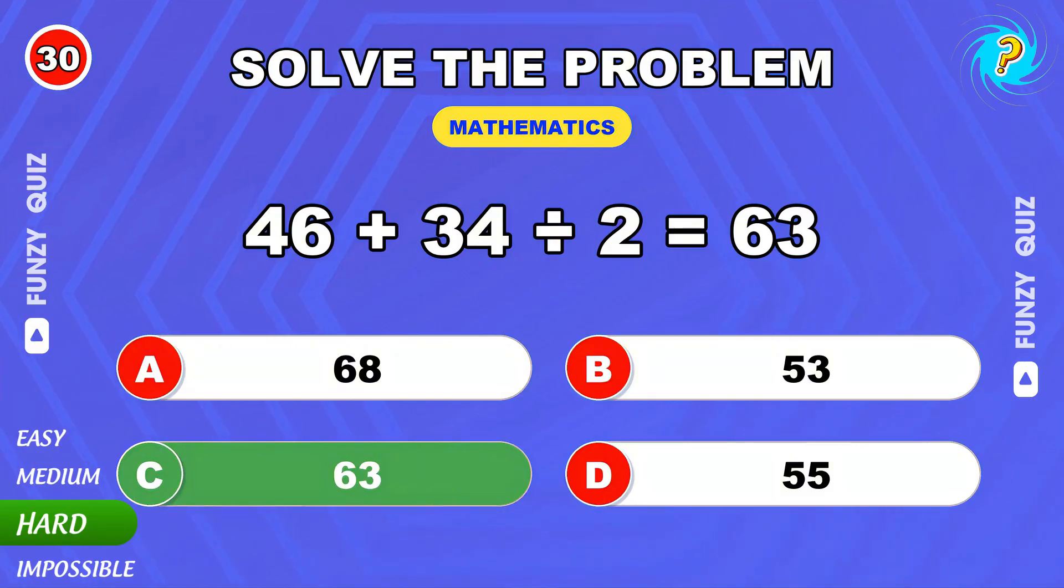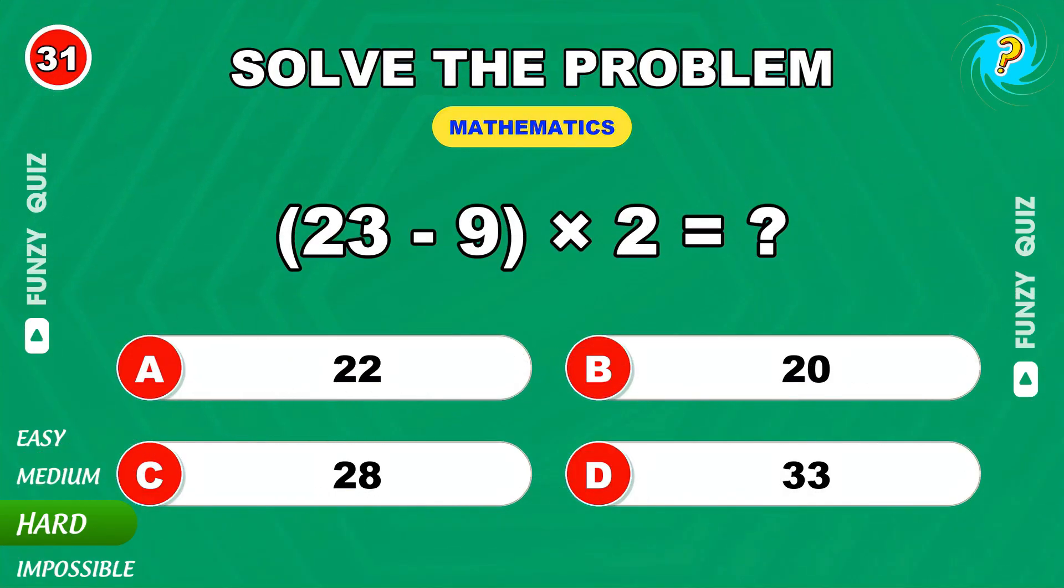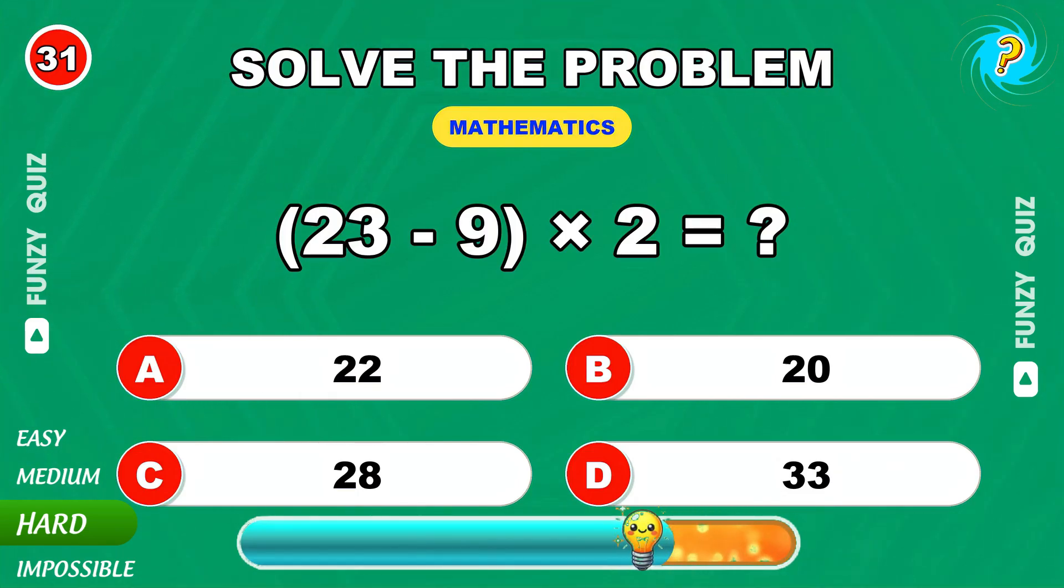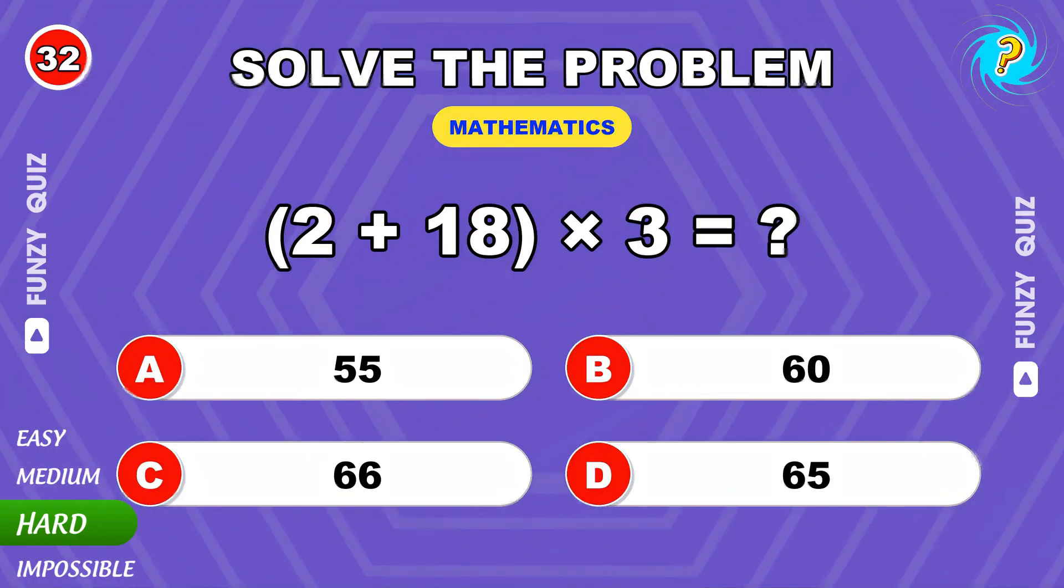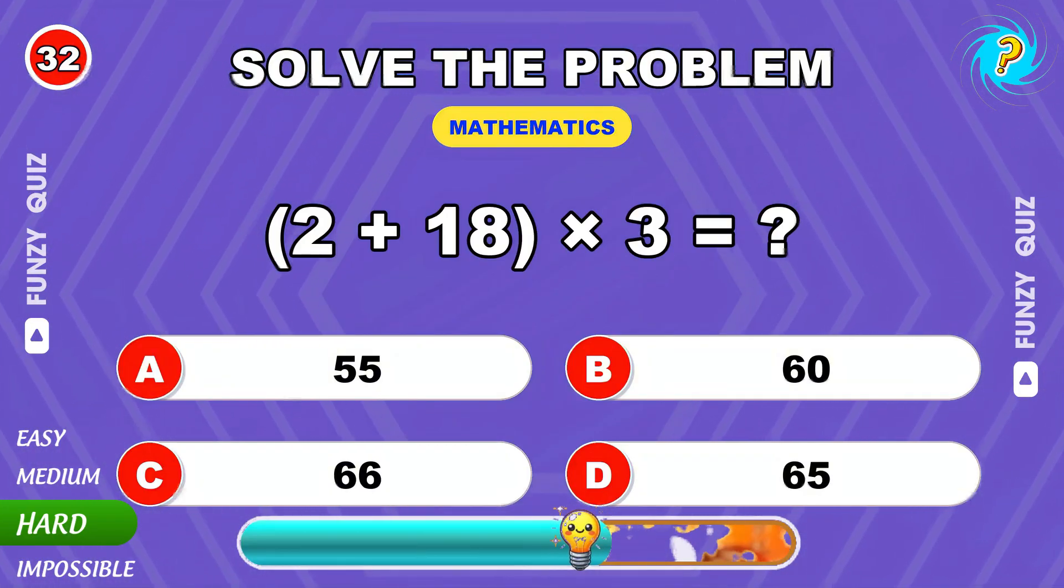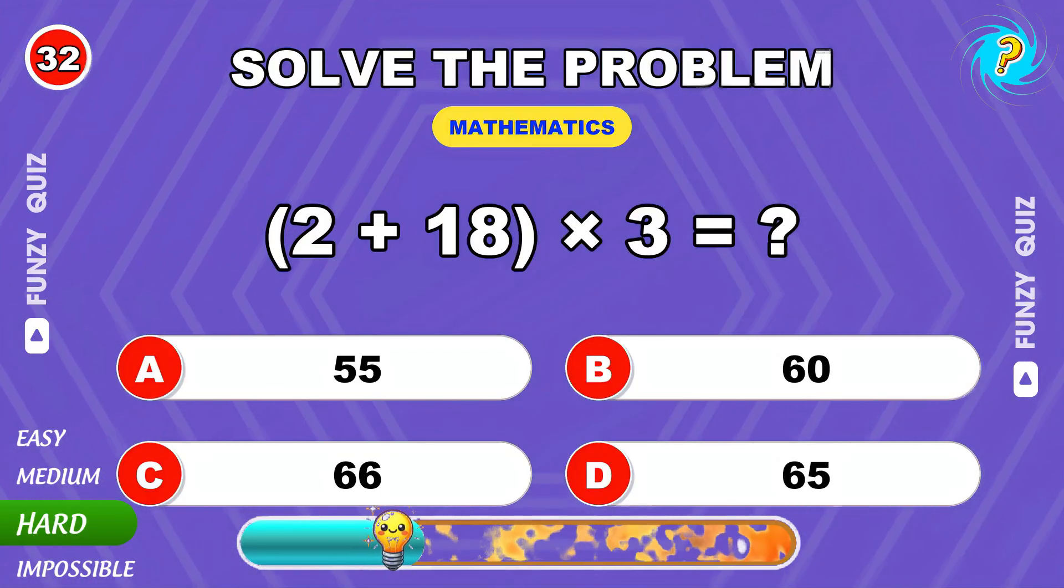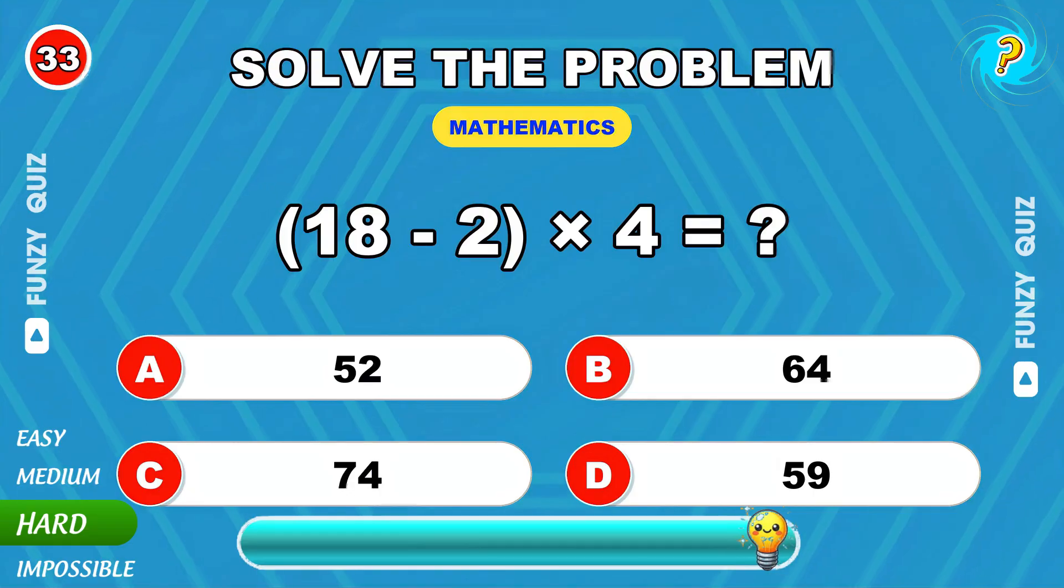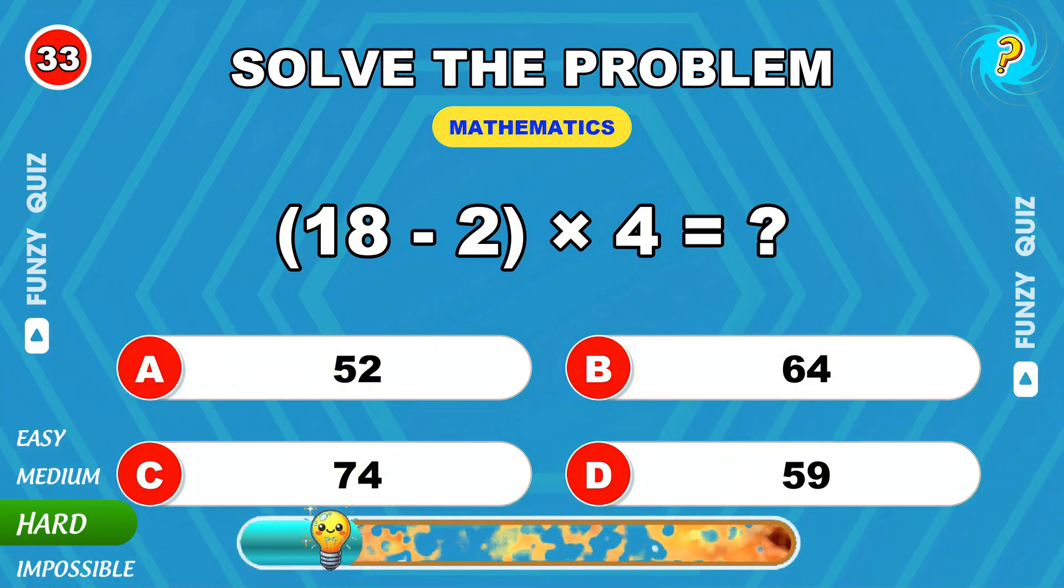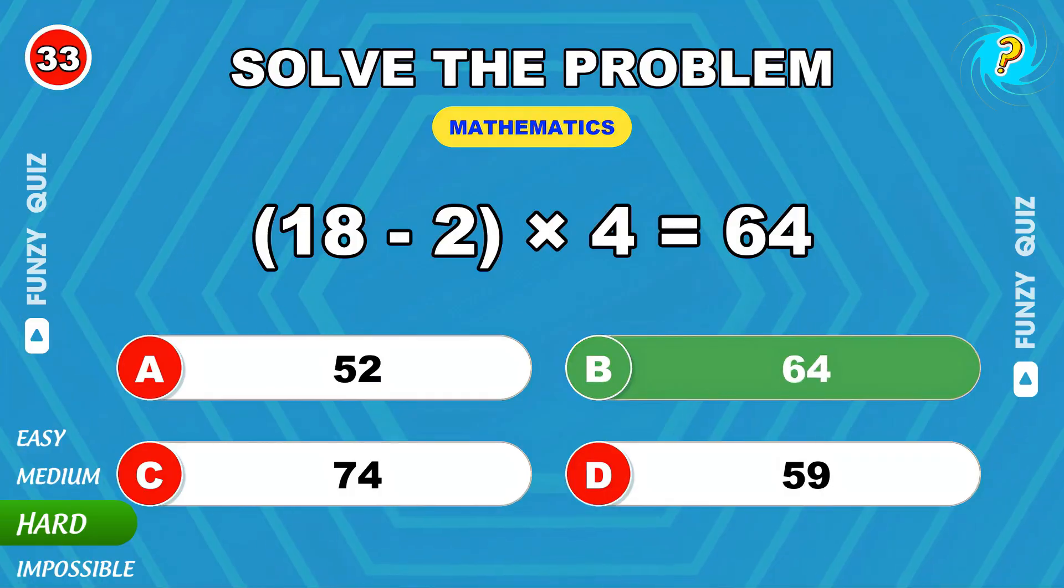46 plus 34 divided by 2. 63. 23 minus 9 times 2. 28. 29 plus 18 times 3. The result is 60. 18 minus 2 times 4. 64. Impressive.